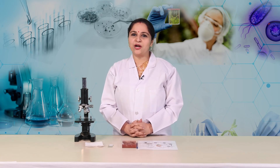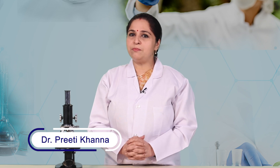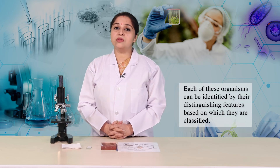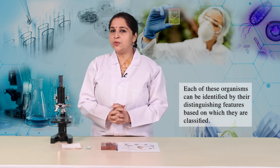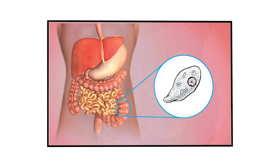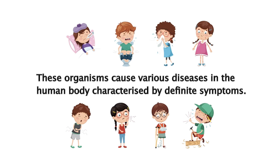Hello, dear learners. We have already learned in the first part of this session about two organisms which affect human health. There are many such organisms which are either parasitic or pathogenic to human beings. Each of these organisms can be identified by their distinguishing features, based on which they are classified. They live in a specific part of the human body and have precise food requirements. These organisms cause various diseases in the human body, characterized by definite symptoms.